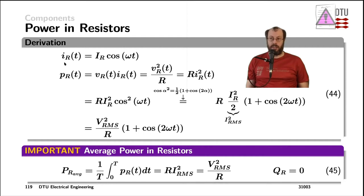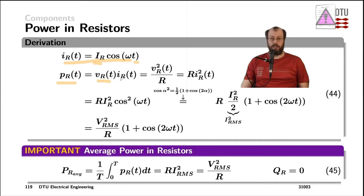In this case, I define the current through a resistor to be a cosine wave. It has its amplitude and I define the phase to be zero. That means that the instantaneous power — the power as a function of time — is the voltage across that resistor as a function of time times the current through that resistor also as a function of time.